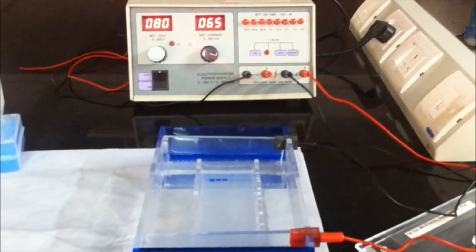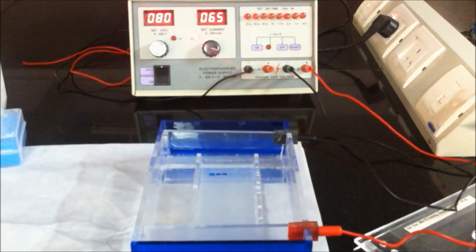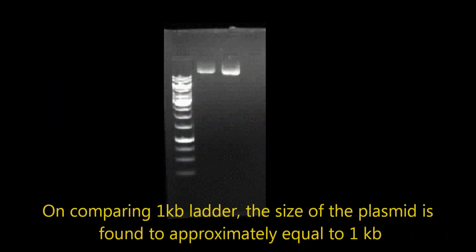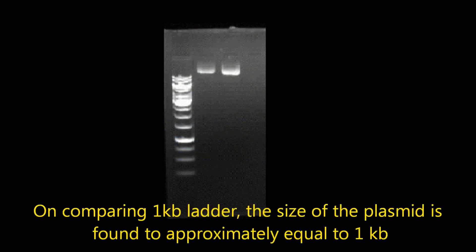The gel is allowed to run. On comparing 1 KB ladder, the size of the plasmid DNA is found to be approximately equal to 1 KB.